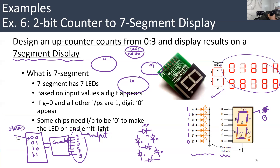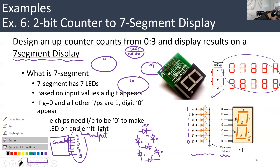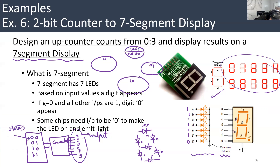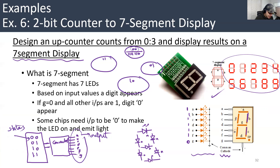For digit one: we need only B and C emitting light, the others are zero. You can do F and E instead, but usually we go with the right-most segments. So for one — state 01 — all of them will be zeros except B and C: A=0, B=1, C=1, then the rest are zeros.